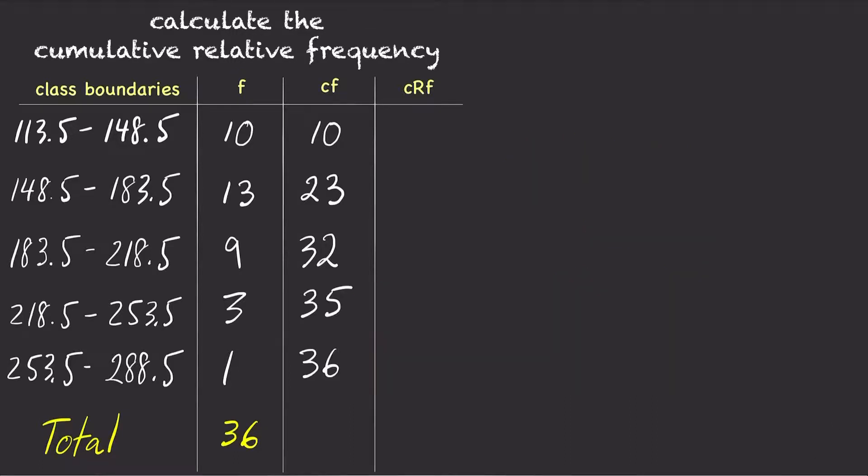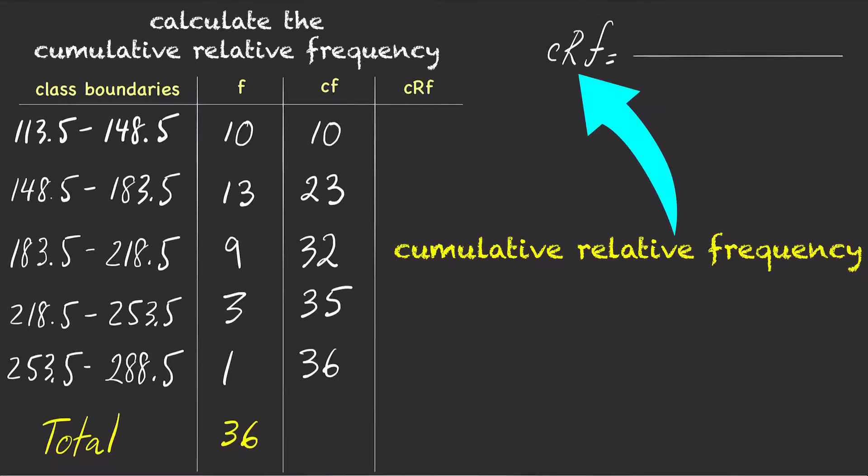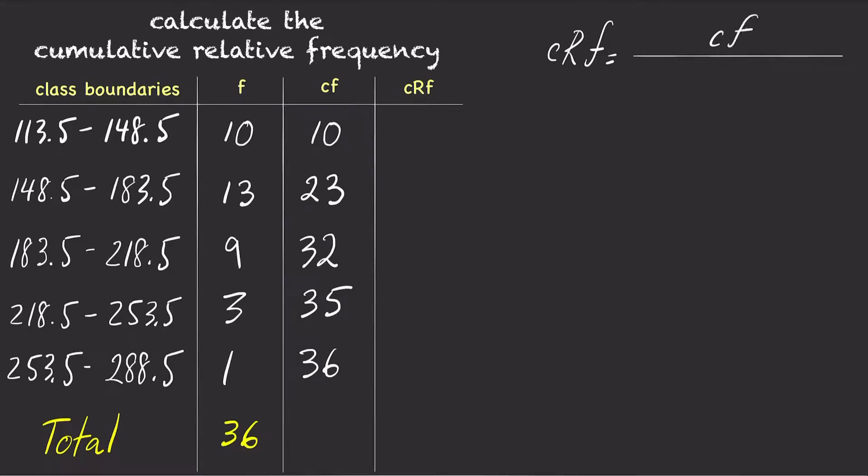Now the cumulative relative frequency can be calculated by simply taking the cumulative frequency for each class and dividing it by the total frequency.